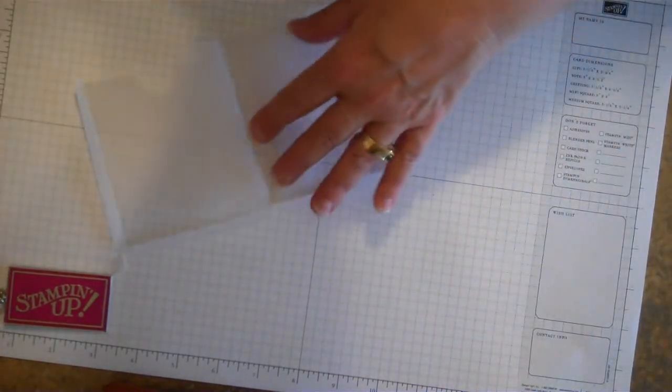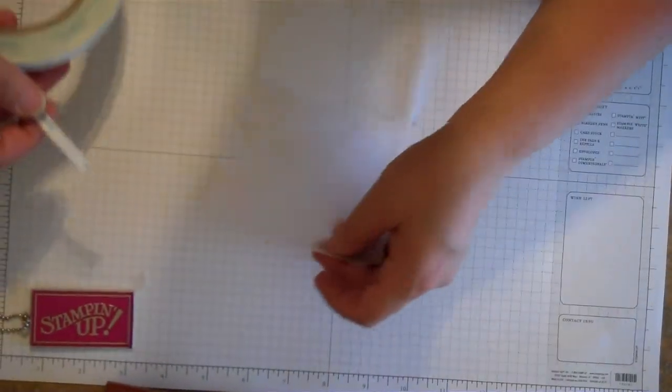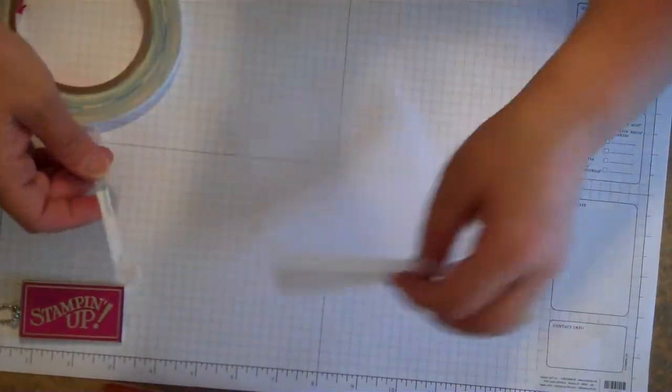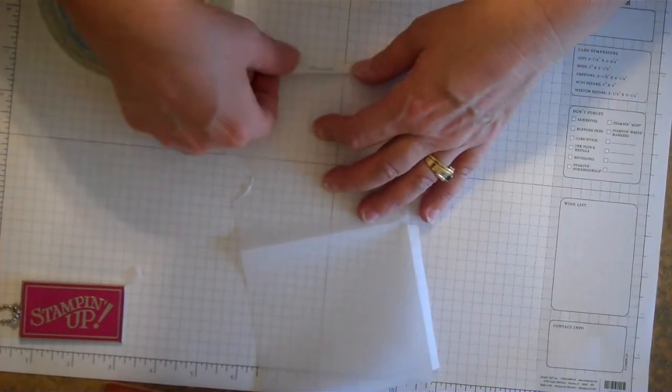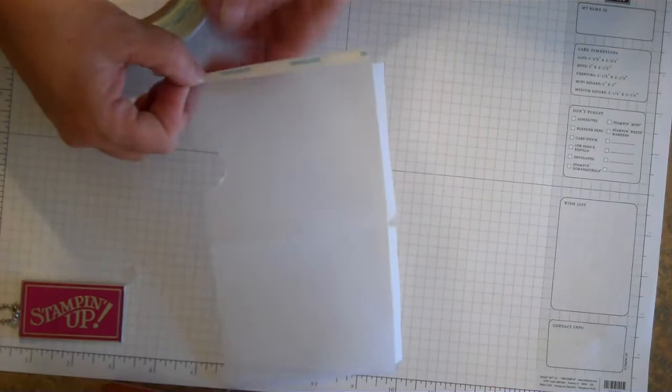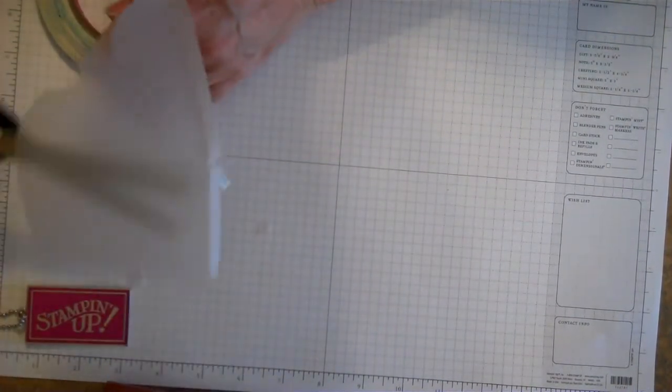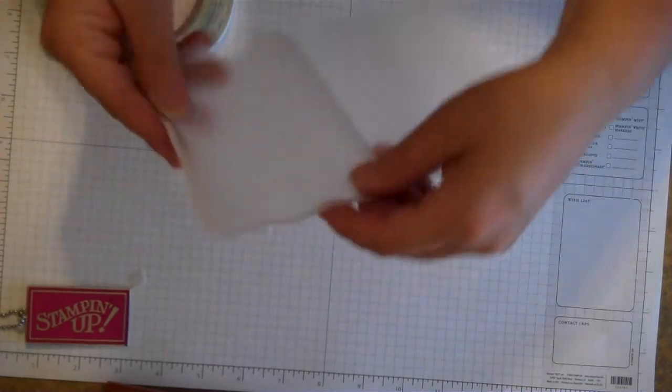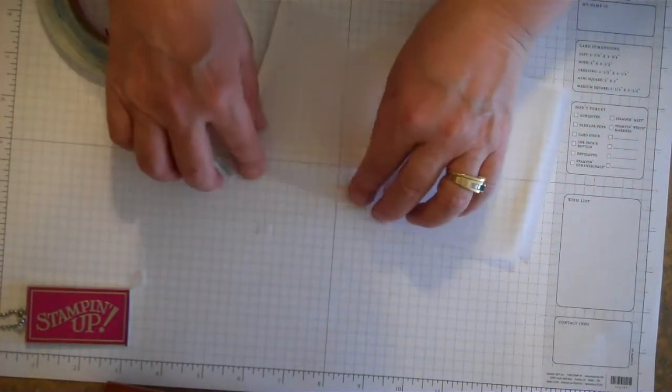Then you're going to take some score tape. I've got a quarter inch score tape, it might be easier to use an eighth of an inch, but you can use the quarter inch since this is cut a quarter inch, but you have to be pretty careful about getting it right on the edges. All I'm doing is putting score tape on one of the long sides and one of the short sides.